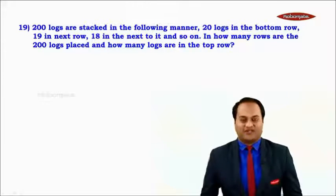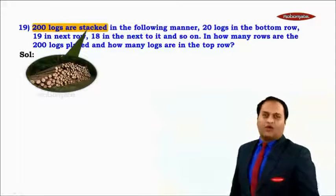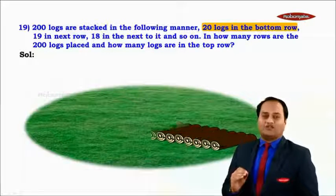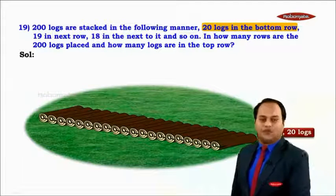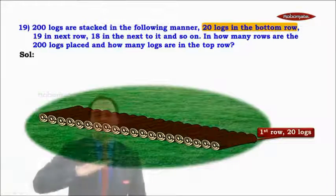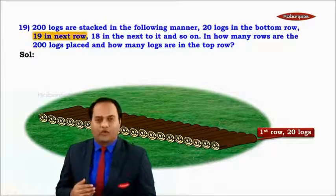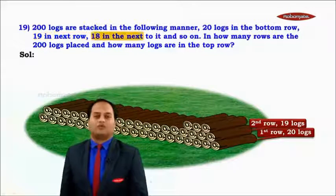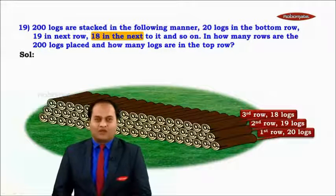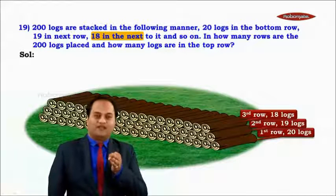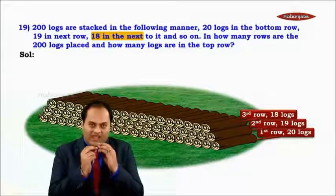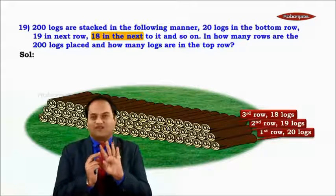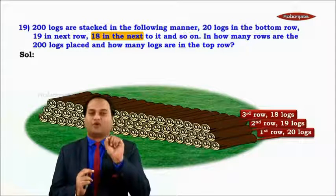Let's understand what is given. These are logs of wood. 20 logs are in the bottom row, so in the first row the first term a1 is 20. In the second row there are 19, and in the third row there are 18. So a1 is 20, a2 is 19, a3 is 18. Here n represents the rows: first row n=1, second row n=2, third row n=3, and the terms are the number of logs.